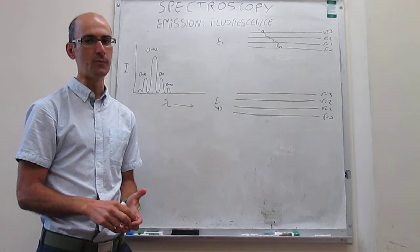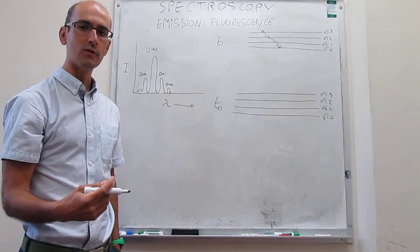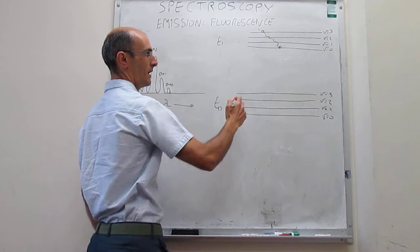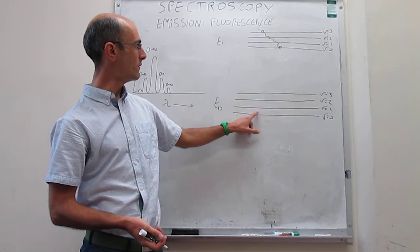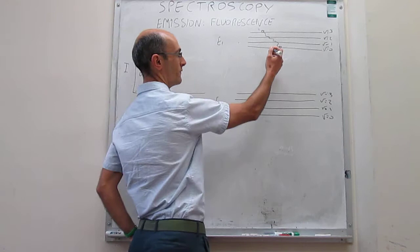After vibrational relaxation, which is pretty fast, the system finds itself in the ground vibrational state of the excited electronic state. Vibrational relaxation can no longer take place because you're already at the lowest possible quantum state of vibration. The only way to lose energy in a radiative manner is to hop back to the ground state, emitting a photon that we can then detect. That is what we call fluorescence.